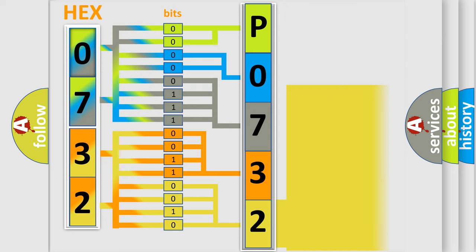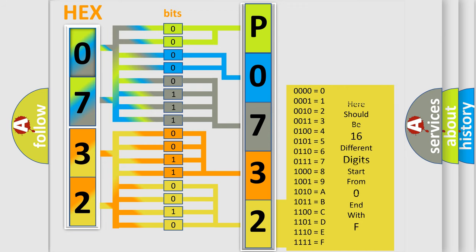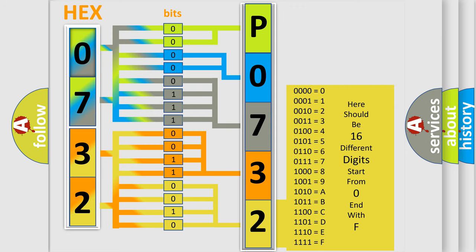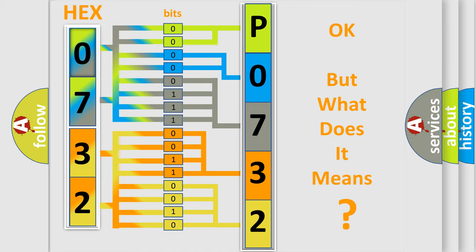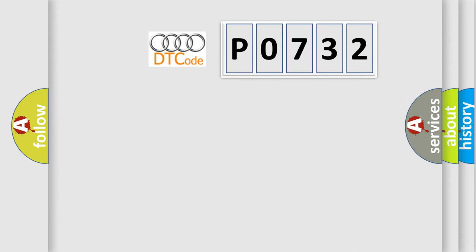A single byte conceals 256 possible combinations. We now know in what way the diagnostic tool translates the received information into a more comprehensible format. The number itself does not make sense to us if we cannot assign information about what it actually expresses. So, what does the diagnostic trouble code P0732 interpret specifically for Audi car manufacturers?